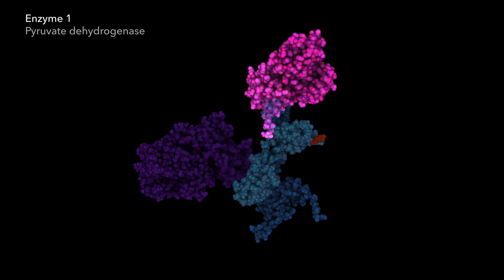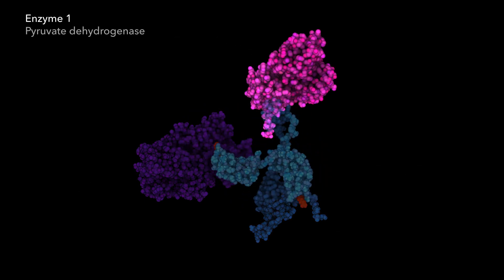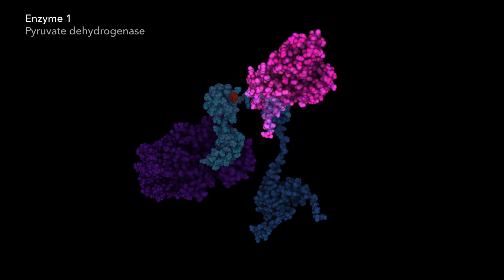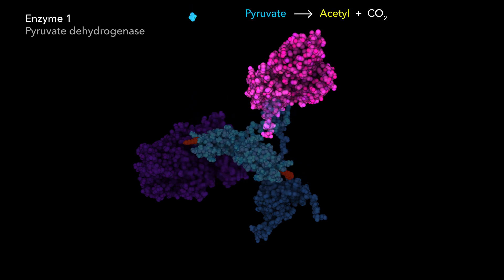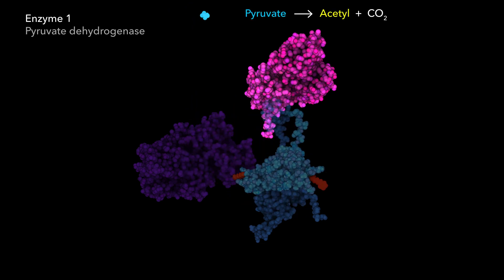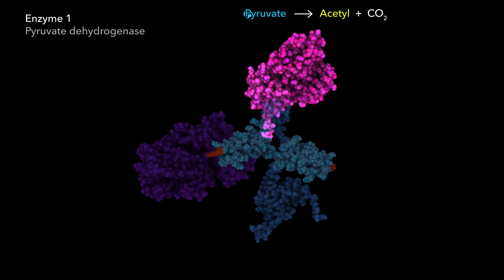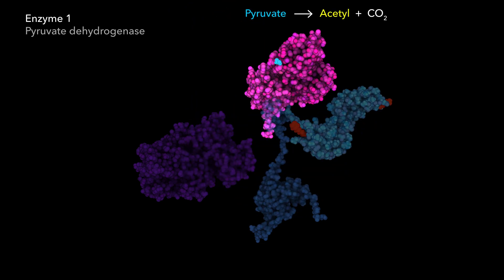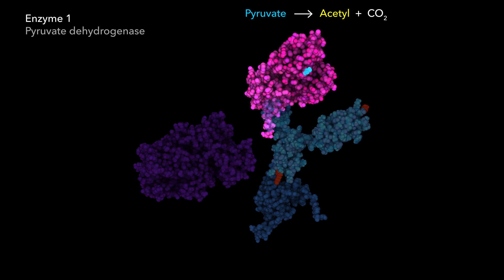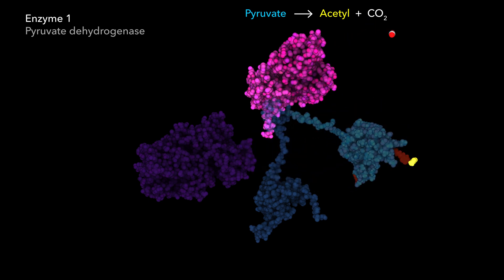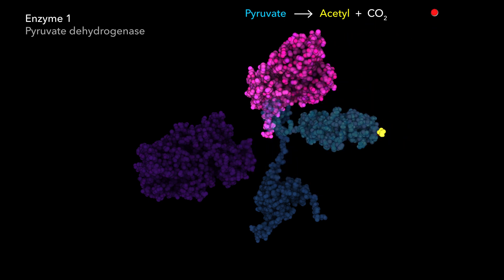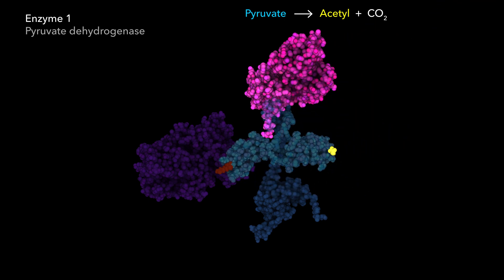The first enzyme catalyzes decarboxylation, transforming 3-carbon pyruvate into a 2-carbon acetyl group, generating carbon dioxide as waste.